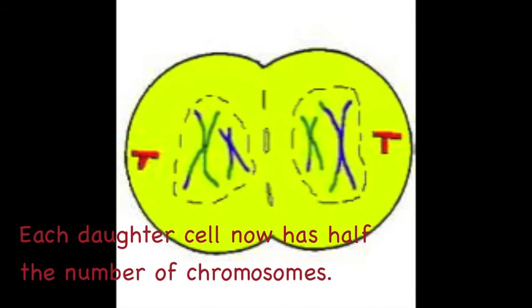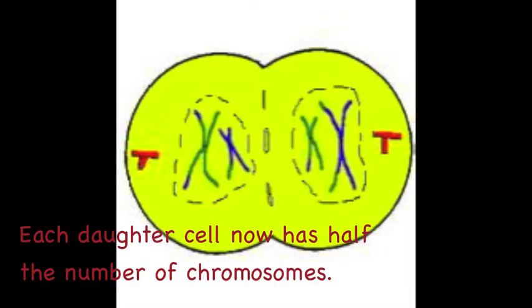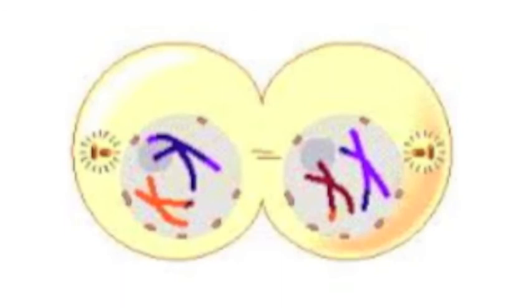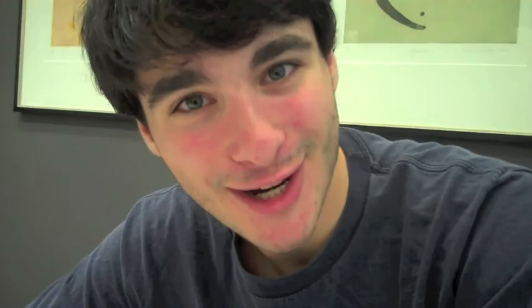And next is anaphase 1, and I believe this is similar to anaphase in mitosis. Right. The kinetochore microtubules shorten and the homologous chromosomes split. And then telophase 1 is just like telophase in mitosis — the spindle network disappears and the nuclear membrane forms around each haploid cell. Then cytokinesis occurs as the cleavage furrow constricts the cytoplasm, dividing into two diverse daughter cells.